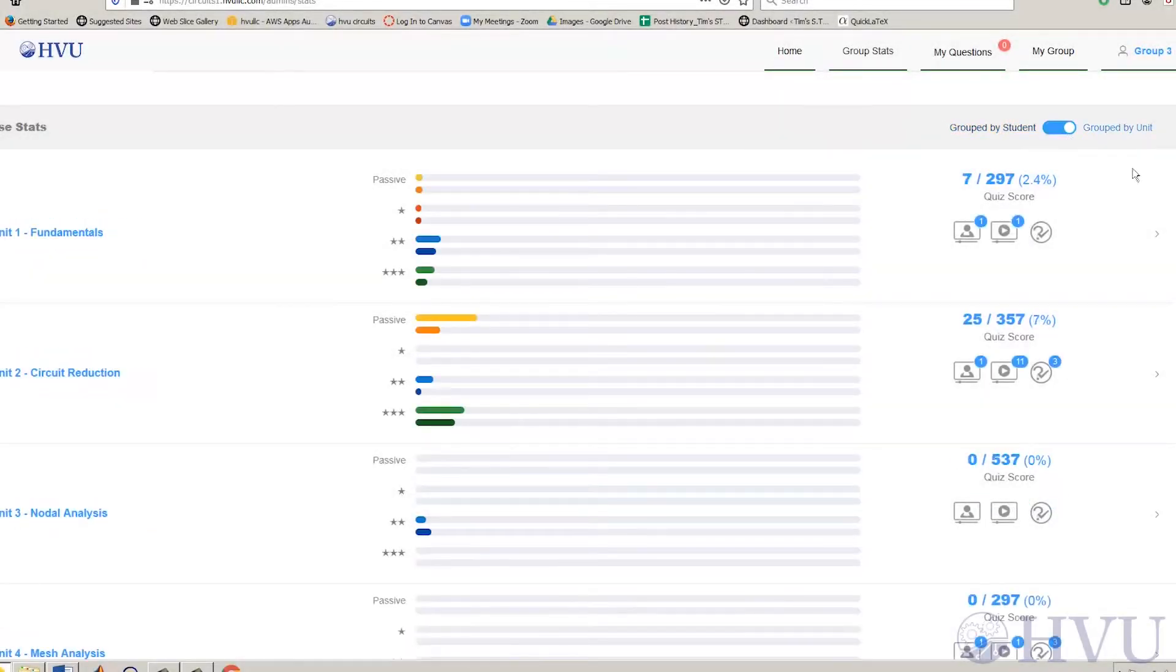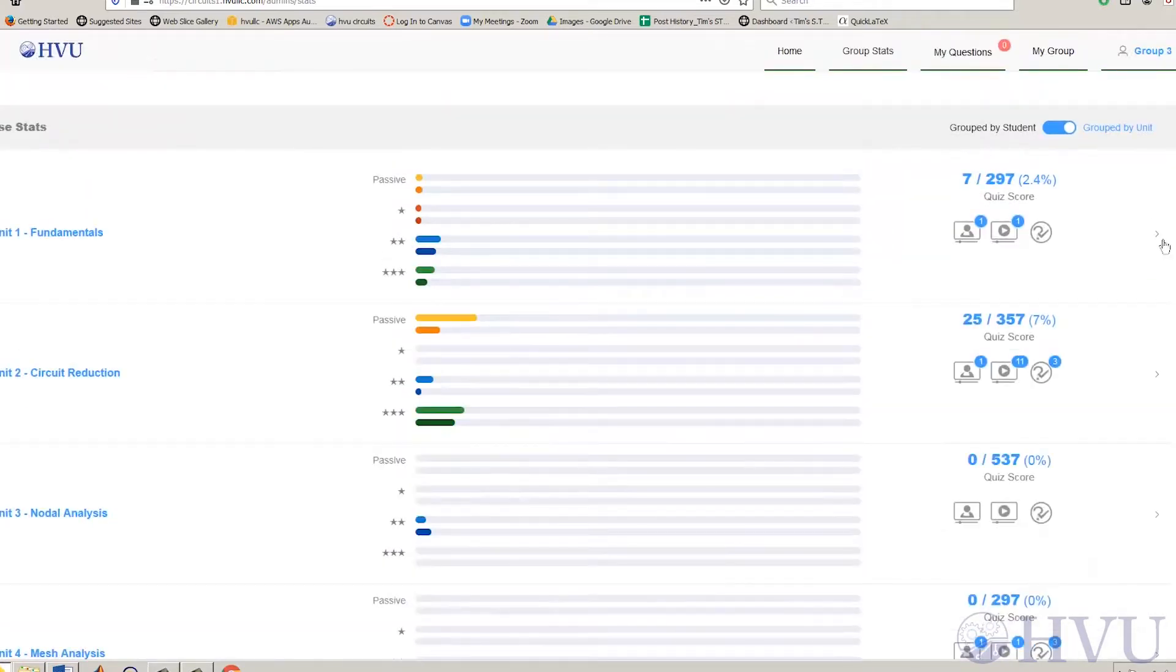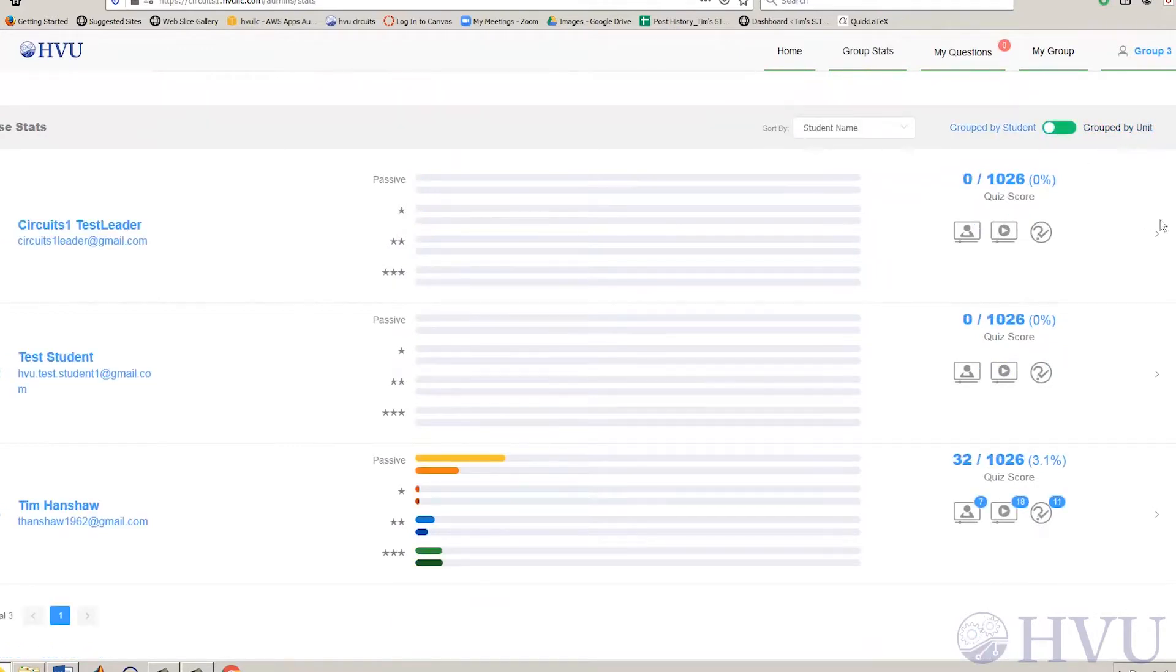In the Grouped by Unit option, the average data for all students can be displayed at the unit level or the lesson level. In the Grouped by Student option, the data is displayed for individual students. The student data can be sorted alphabetically by student last name, email address, by the total number of points completed, or the total number of points attempted. The default view in all of these cases is at an overall course level.